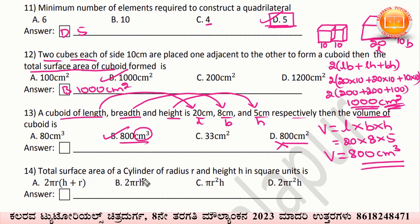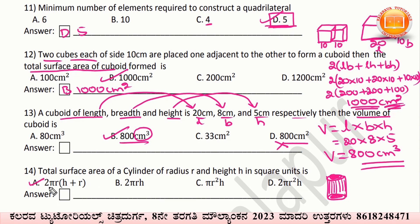The total surface area of a cylinder of radius R and height H. The total surface area means curved surface area plus top and bottom. The surface area becomes 2πR(H + R). Option A is the correct answer.